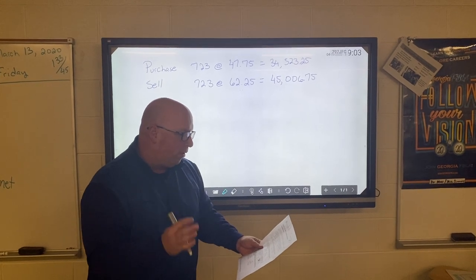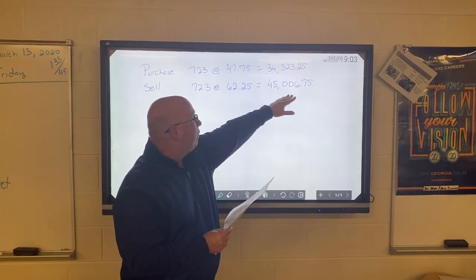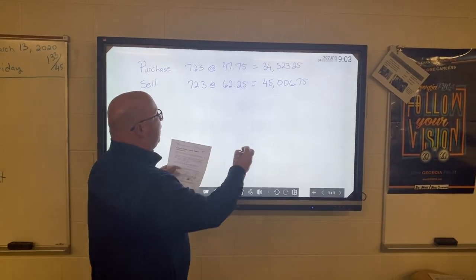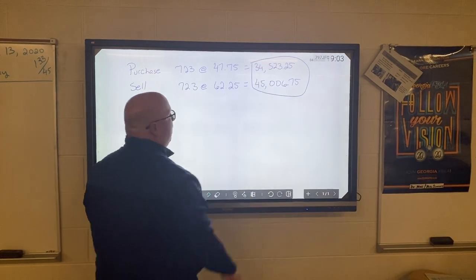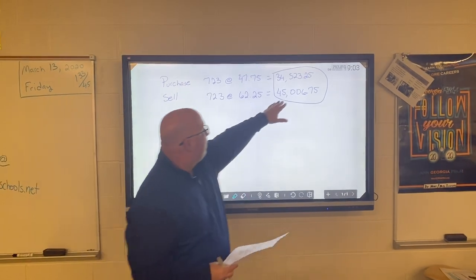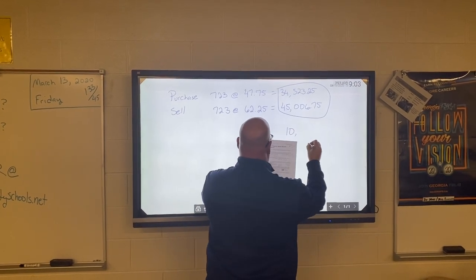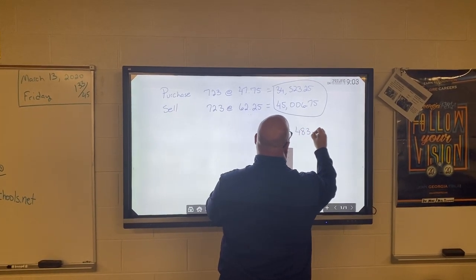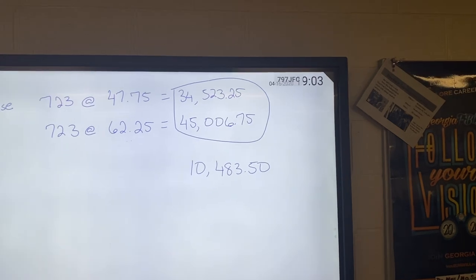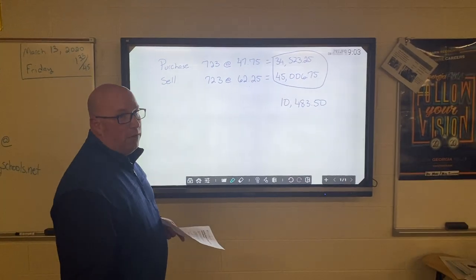Then it asks you how much money did you make or lose. So we know we made money, so we can simply take $45,006.75 minus $34,523.25. I put that up there for illustrative purposes. So we can take the bottom and subtract the top from that, and if we do that we're going to get a difference of $10,483.50. So that's our profit.